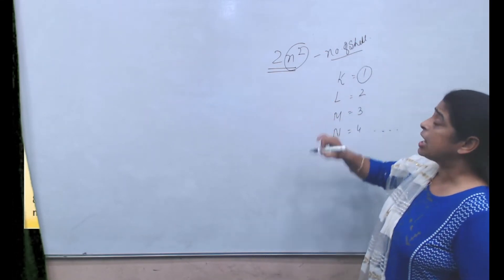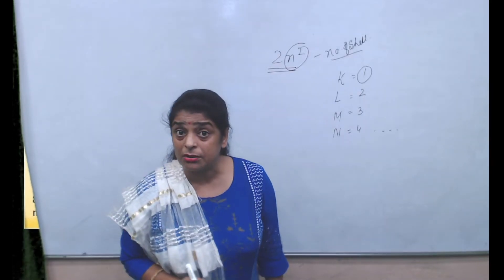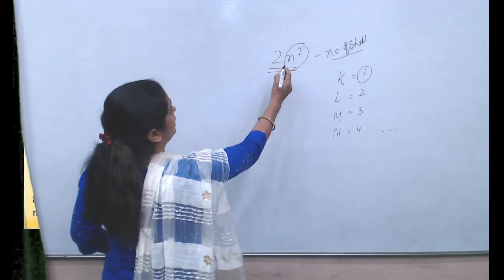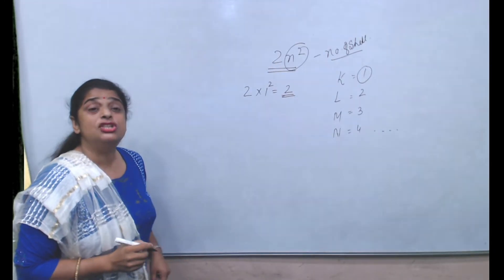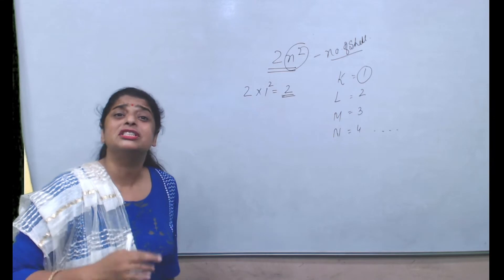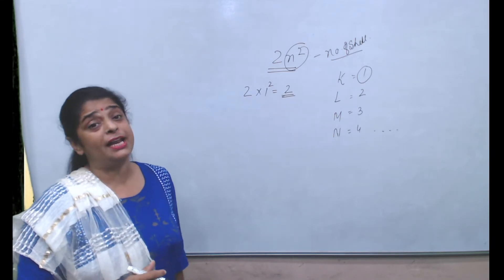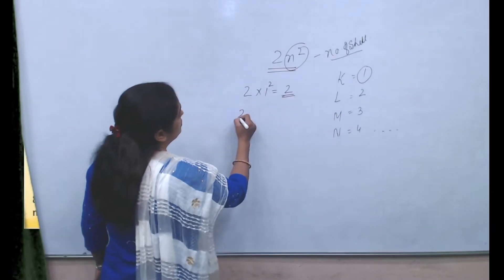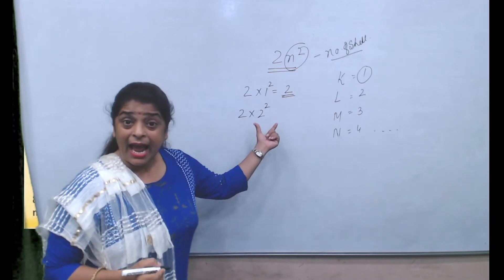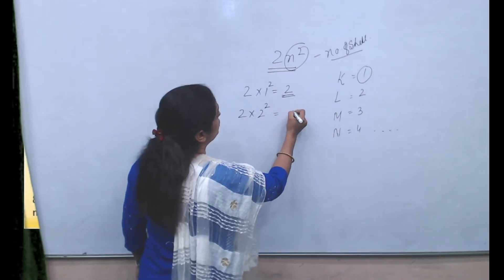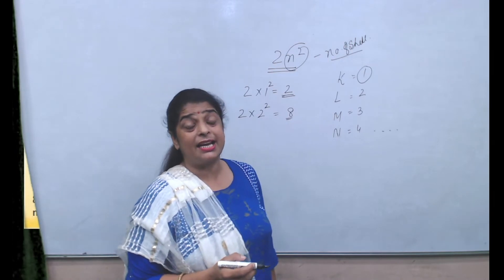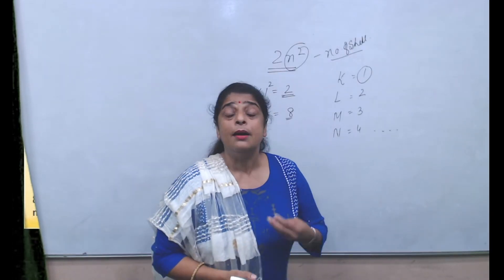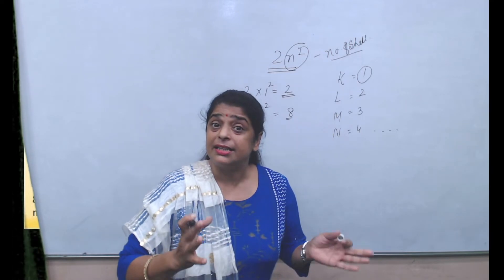If we have to decide how many electrons the first shell — that is, the K shell — can accommodate, we apply this rule. We put n=1, so 2×1²=2. The first shell can accommodate 2 electrons. Now for the second shell, we put n=2: 2×2²=2×4=8. The second shell can accommodate 8 electrons. This is how we calculate the accommodating capacity of shells.